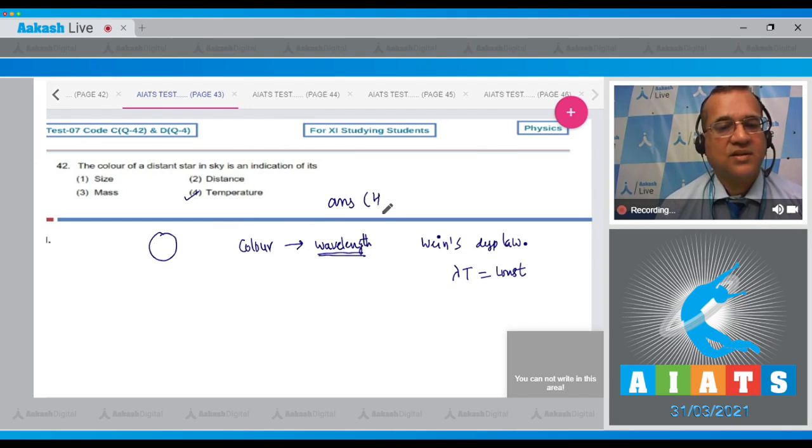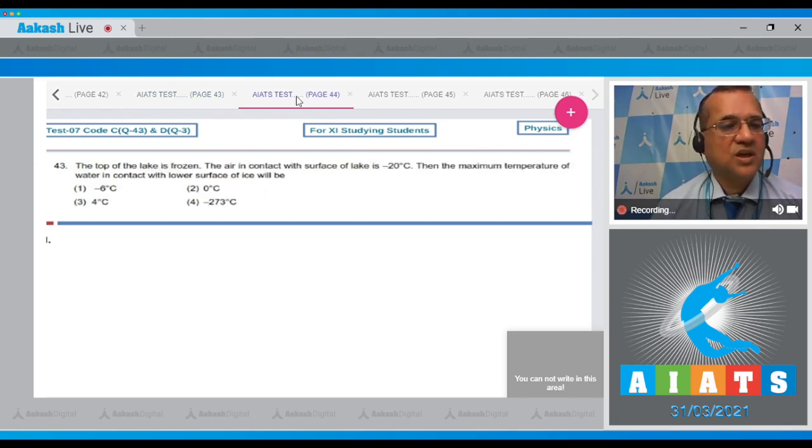Question number 43: The top of the lake is frozen. The air in contact with the surface of the lake is at minus 20 degrees Celsius. What is the maximum temperature of the water in contact with the lower surface?